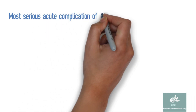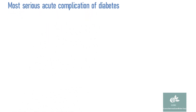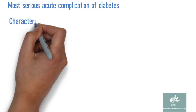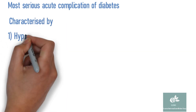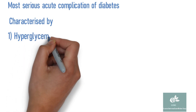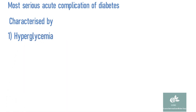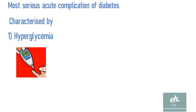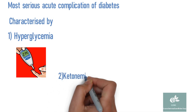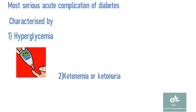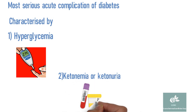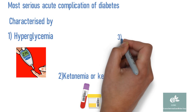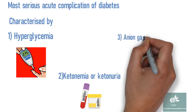DKA is the most serious acute complication of diabetes. DKA is characterized by a triad: first, hyperglycemia — the blood glucose level is usually more than 250 mg per deciliter and generally less than 800 mg per deciliter; secondly, ketonemia or ketonuria; and thirdly, anion gap metabolic acidosis.